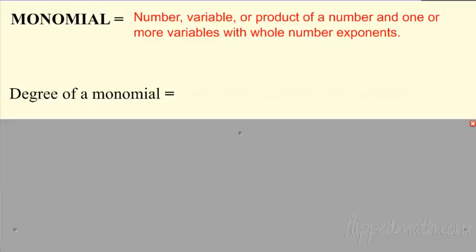So a monomial is just a number, a variable, a product of the two. So you could have a number. Let me write this down. So maybe you have the number 10. That is a monomial. You could have a variable. You may have x. You could have the product, that means multiply 2. You could have 10x. These are all monomials.